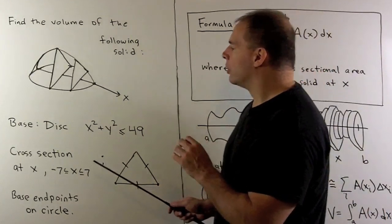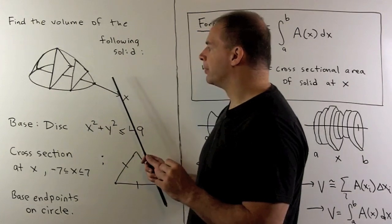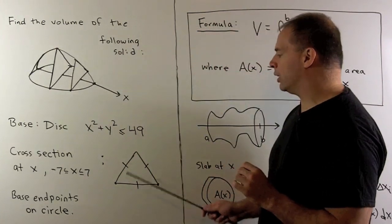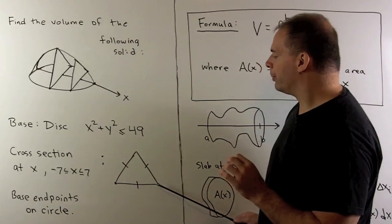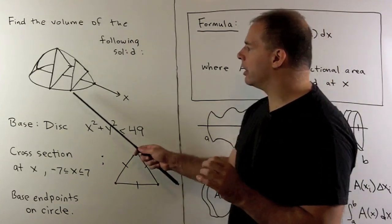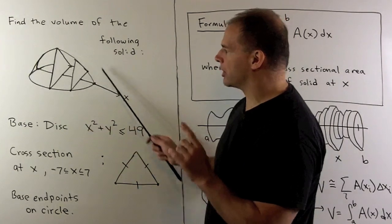Then, for the cross-sections, these are going to run perpendicular to the x-axis. Each cross-section is going to be an equilateral triangle. The base of each triangle will have its endpoints on the circle. That's going to fill out a solid that looks something like this.